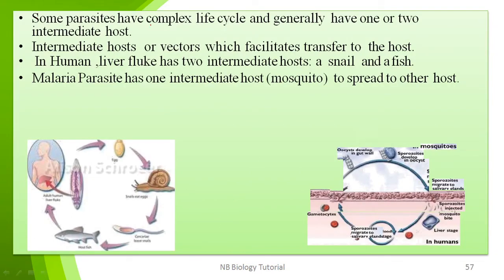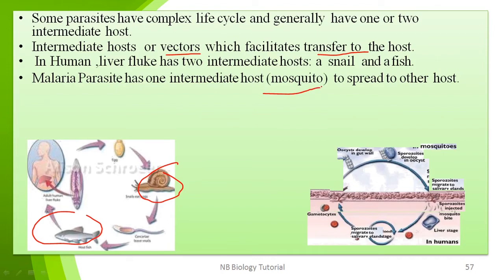Some parasites have complex life cycles with one or more intermediate hosts, also called vectors, which are used to transfer the parasite to the main host. For example, the liver fluke has two intermediate hosts — the snail and the fish. In the case of malaria, the malarial parasite has one intermediate host — the mosquito — which carries Plasmodium vivax and spreads it to human beings.